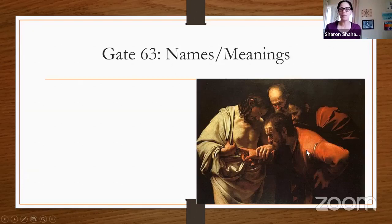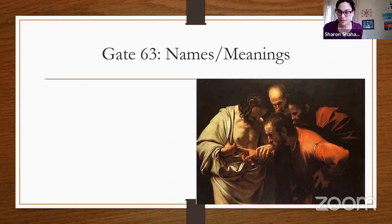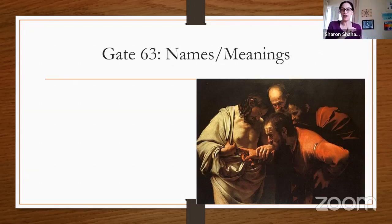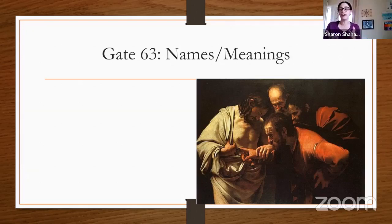Gate 63 is part of the circuit of logic in the body. Logic takes that keynoting of doubt and questioning from Gate 63. You can use that as a keynote for the entirety of the logical process. I'll show you how that runs through the body graph and where we can find it.